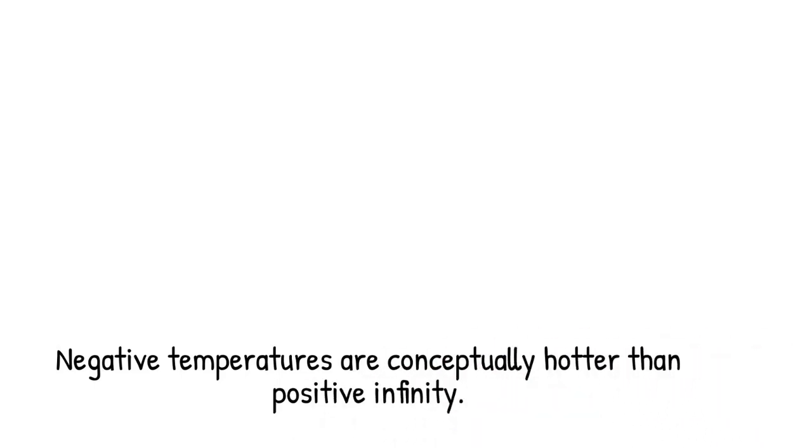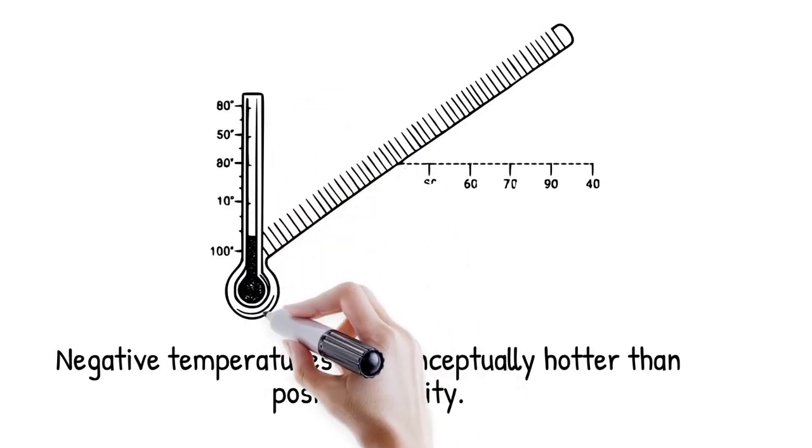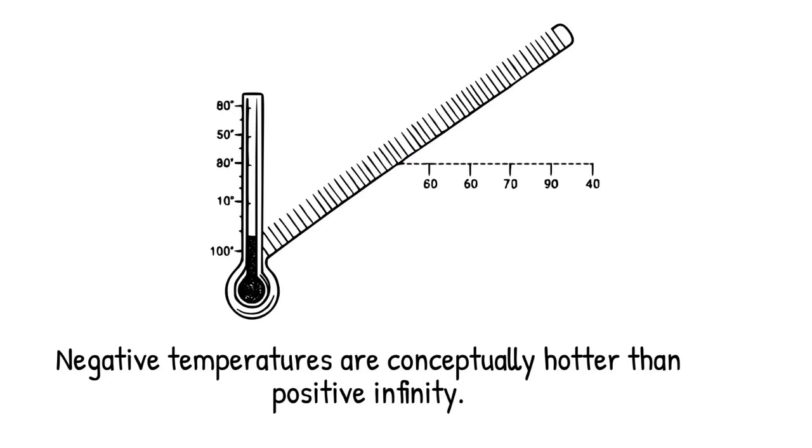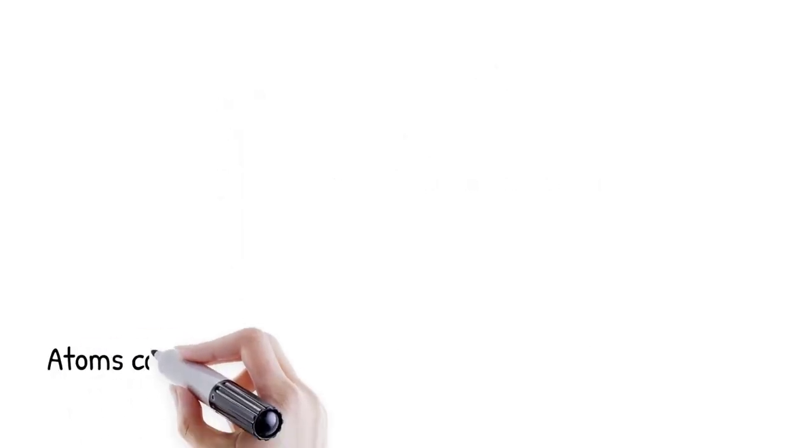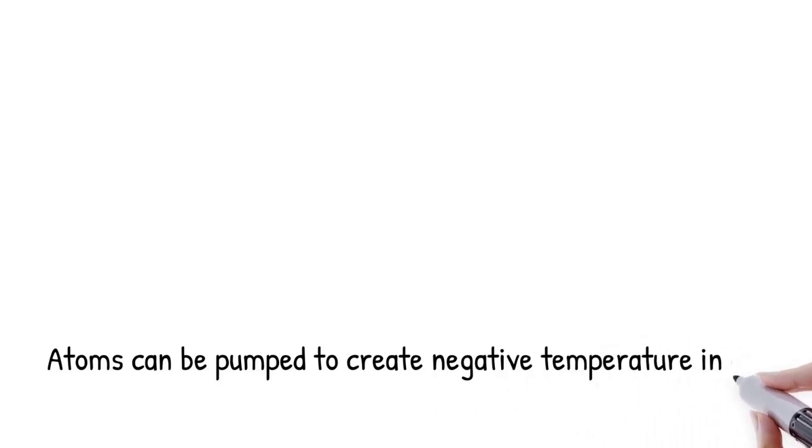On a continuous temperature scale, these negative values sit beyond the infinite positive end, meaning they are conceptually hotter. Therefore, when a negative temperature object touches a regular one, heat flows from the negative temperature object into the ordinary cooler one.